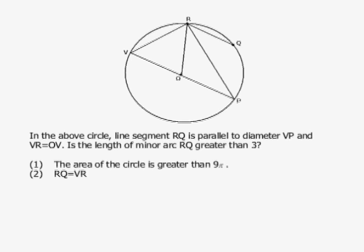In the above circle, line segment RQ is parallel to the diameter VP. We know that VP is a diameter, and this triangle has equal radii, making it an isosceles triangle.